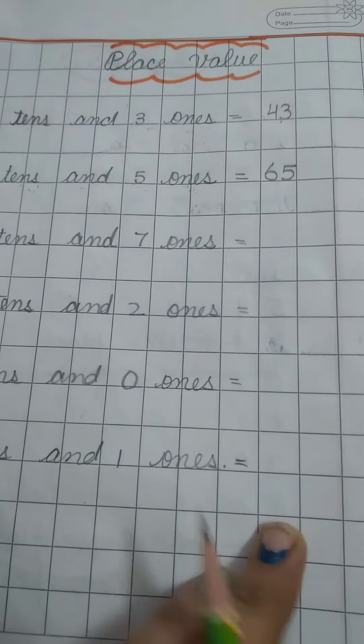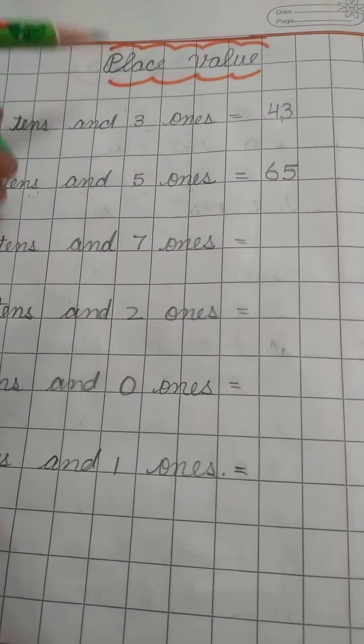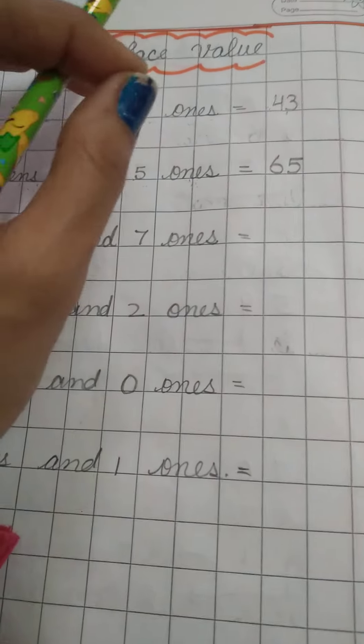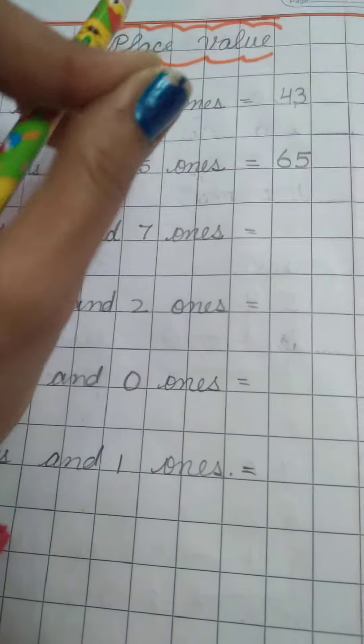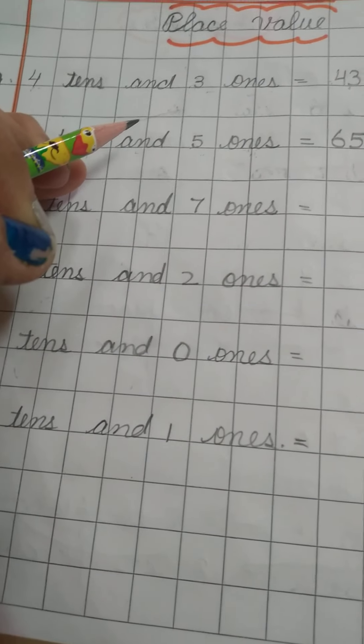So this is how we do it. Place value means which place the number occupies: ones place or tens place. Thank you so much.